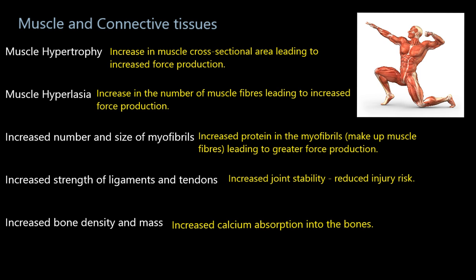Coming away from the muscles, we're going to have increased strength of ligaments and tendons. Ligaments hold bones to bones; tendons hold muscle to bones. The tendons have to get stronger because the muscles are getting stronger — it's the tendon that holds the muscle to the bone, and we don't want the tendon ripping clear of the bone. Also, if the muscles are producing more force they're producing more powerful actions at the joints, so we need stronger ligaments to keep that joint safe. We get better joint stability and a reduced injury risk. And finally, since joints are made of bones, we're also going to get increased bone density and mass through strength training — more calcium is laid down into the bones, making them stronger.